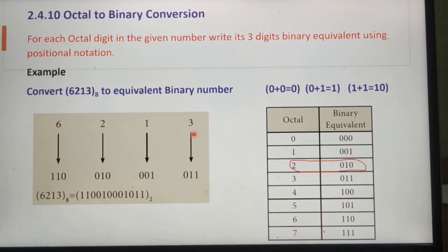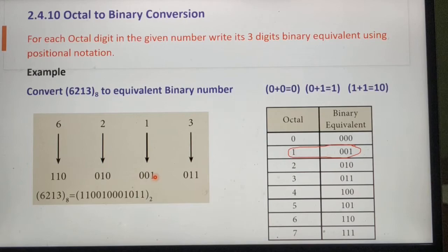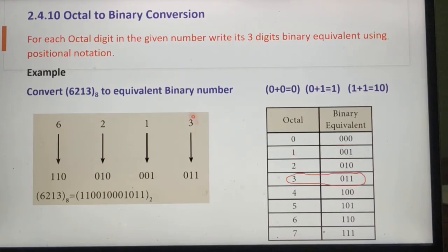Next digit is 1; its binary equivalent is 001, that is also written. Next digit is 3; its binary equivalent is 011, that is also written here.